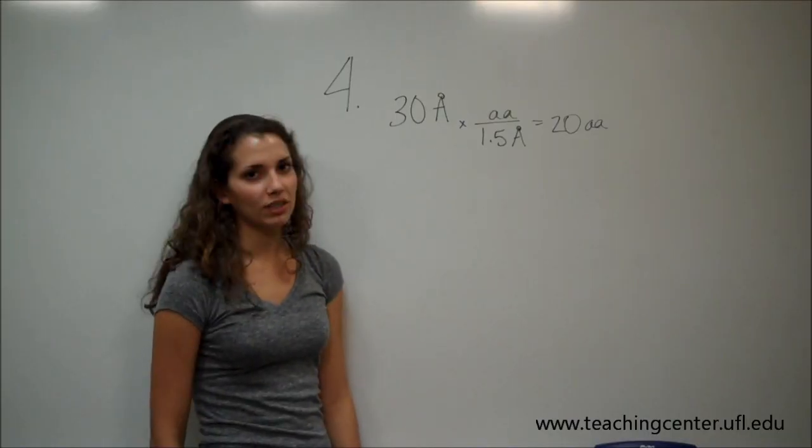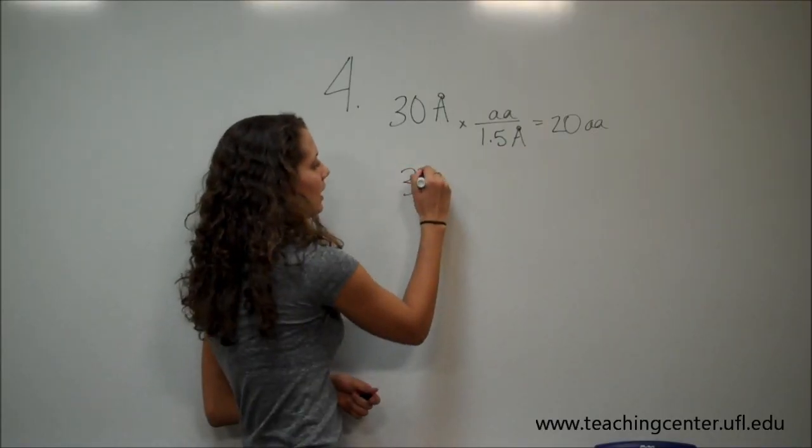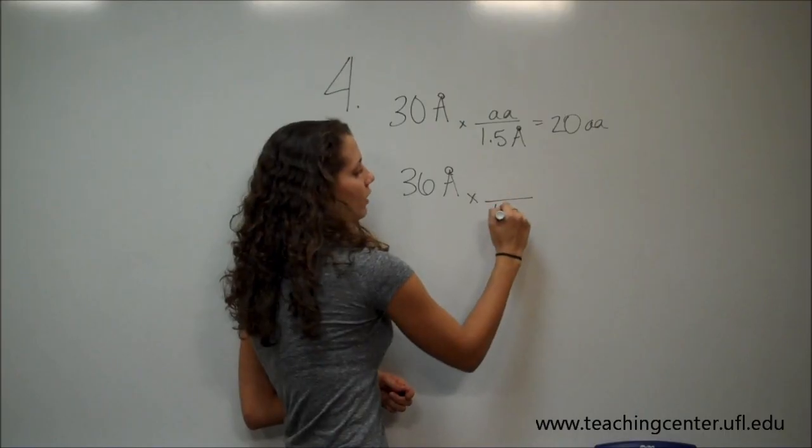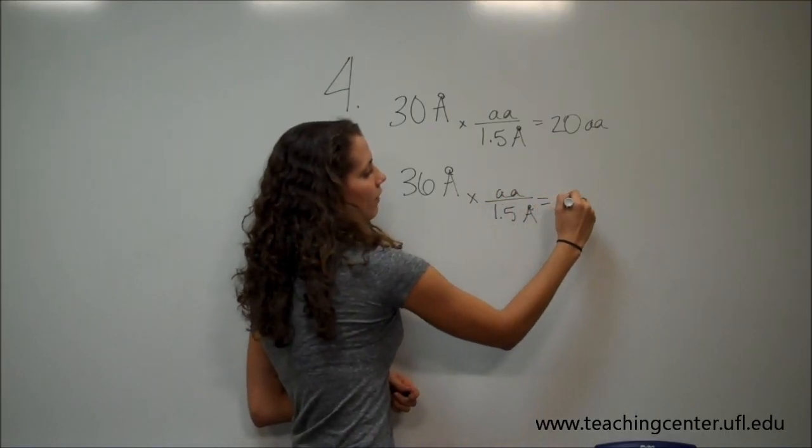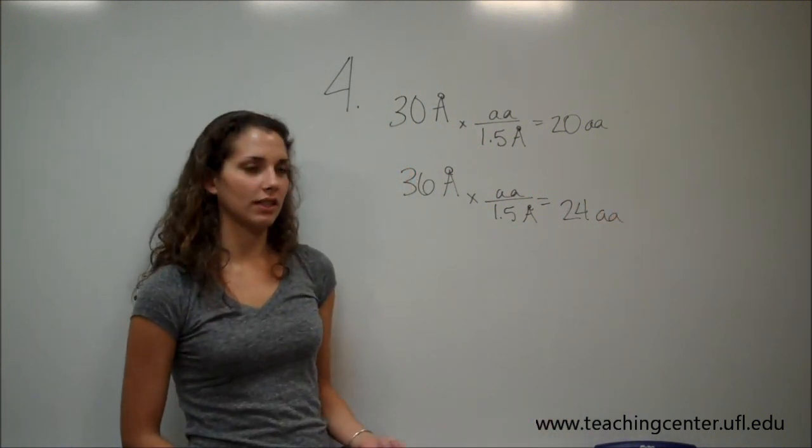So this question is just saying, what if it were six angstroms longer? So we're just going to do the same exact calculation, but with 36. There's still 1.5 angstroms per amino acid. So when we solve this, we find that there are 24 amino acids required to cross this membrane.